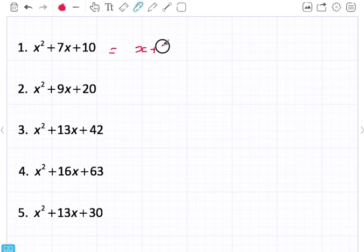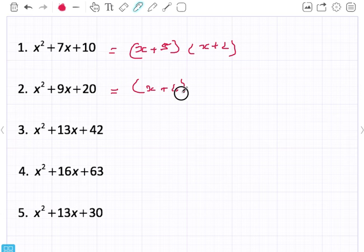This is x plus five and x plus two. This is x plus four and x plus five. So they multiply to give the twenty and they add together to give the nine.